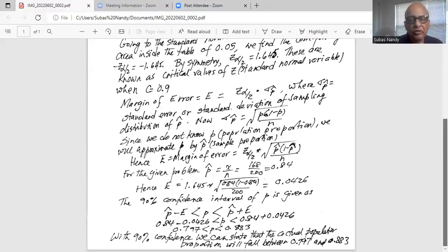So I do the calculation and I find that the lower boundary is 0.797 and the upper boundary is 0.883. So what is the interpretation of this interval?